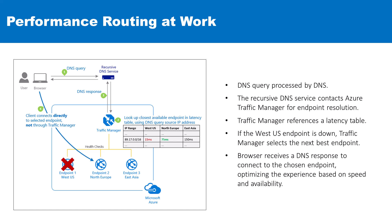For instance, a source IP within the range of 89.17.0.0/16 would find the West US endpoint to have a latency of 15 milliseconds, making it the ideal choice under normal circumstances. That said, if an endpoint such as endpoint 1 in the West US is experiencing issues and fails health checks, Traffic Manager is going to bypass it.